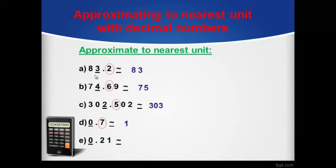Next one: 0.21. We don't have numbers before the units digit, so we go directly to the tenths digit, which is 2, a weak number. That will do nothing with our units digit, so our result will be 0, and don't forget to cancel out the decimal part.